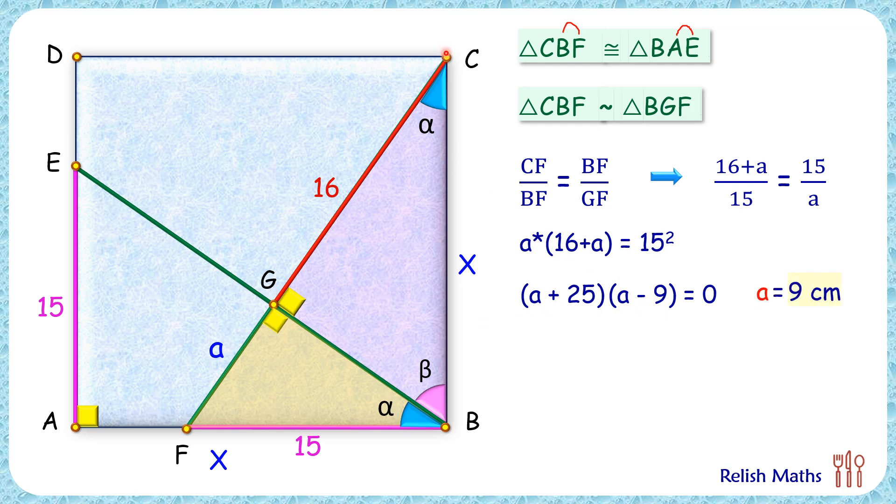Thus this full length CF is 25 centimeter. In triangle CBF, if we apply Pythagoras theorem, we will get x squared plus 15 squared equals 25 squared. Solving it, we get the value of x as 20 centimeter.